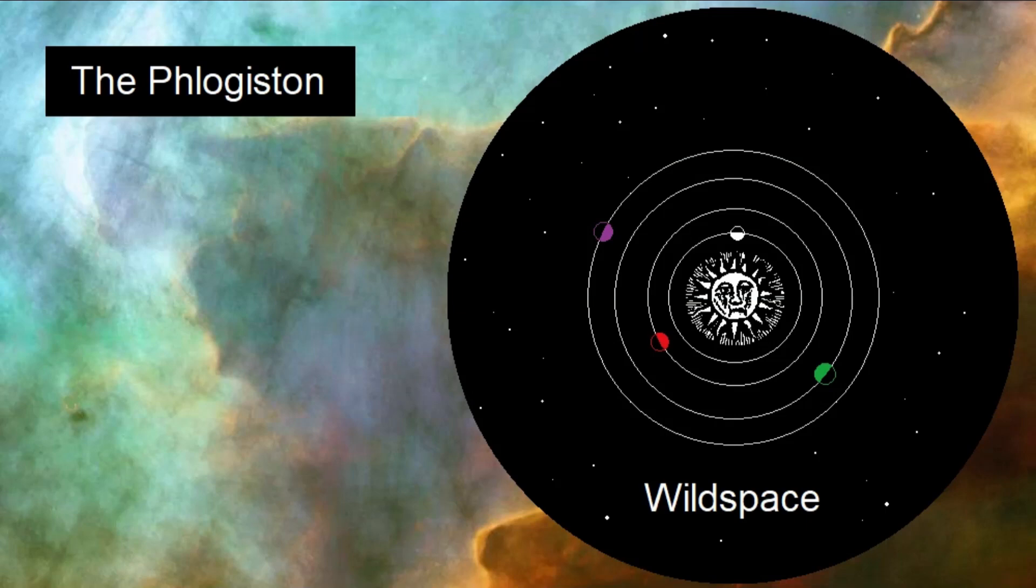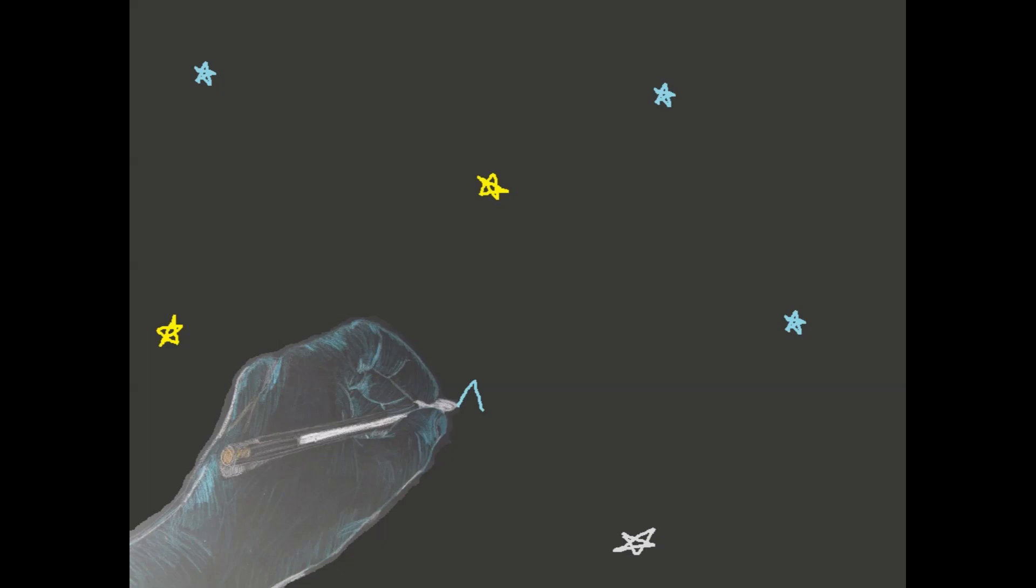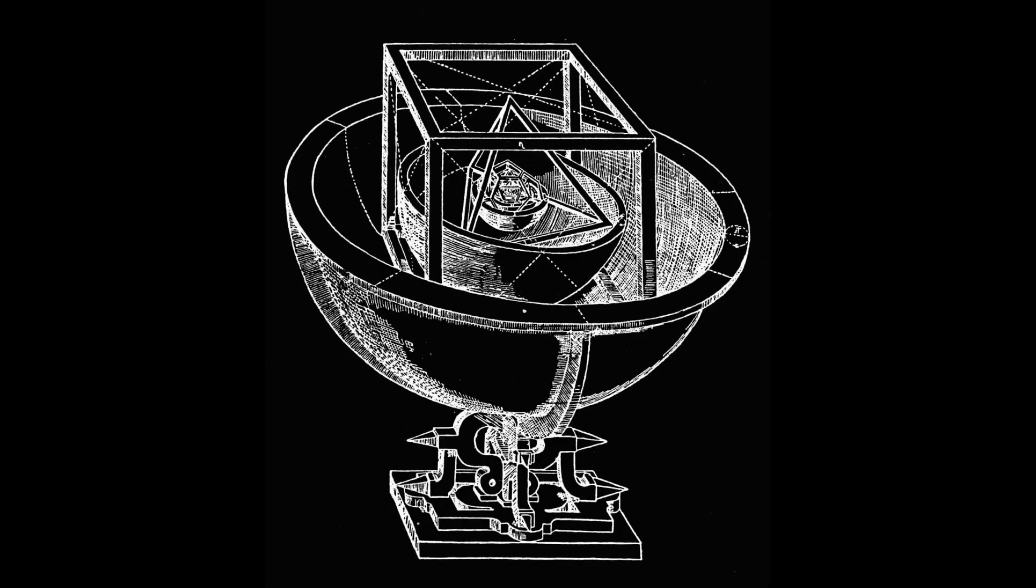This also allows each setting to have its own constellations and astronomical phenomena, since it's all inside the crystal sphere for that setting and has no effect on other crystal spheres.